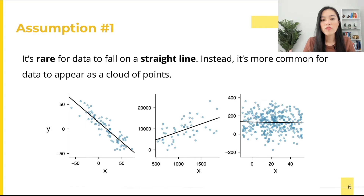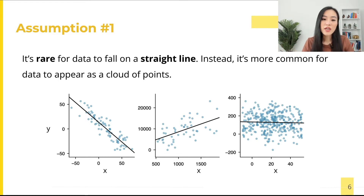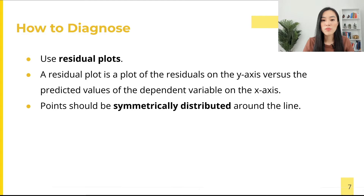In reality, it is rare for x and y to have a perfect linear relationship — in other words, for data to fall perfectly on a straight line. Instead, it's more common for data to appear as a cloud of points. In each scenario shown, the data fall around a straight line but none fall exactly on the line.